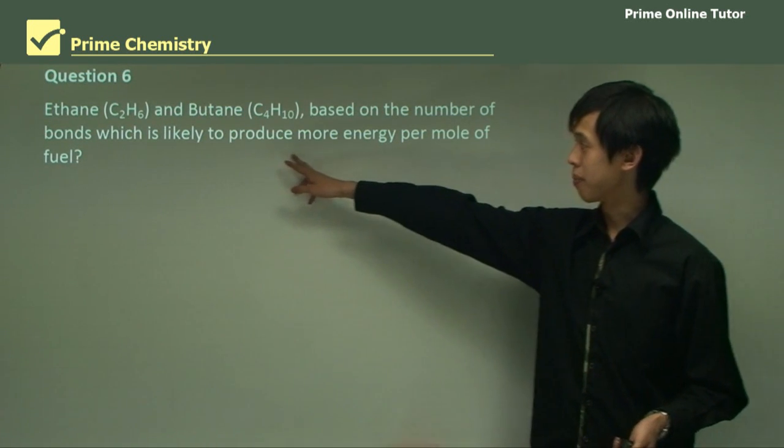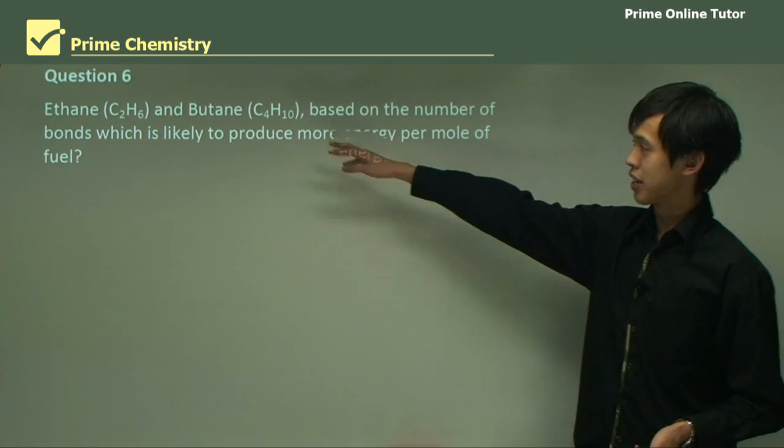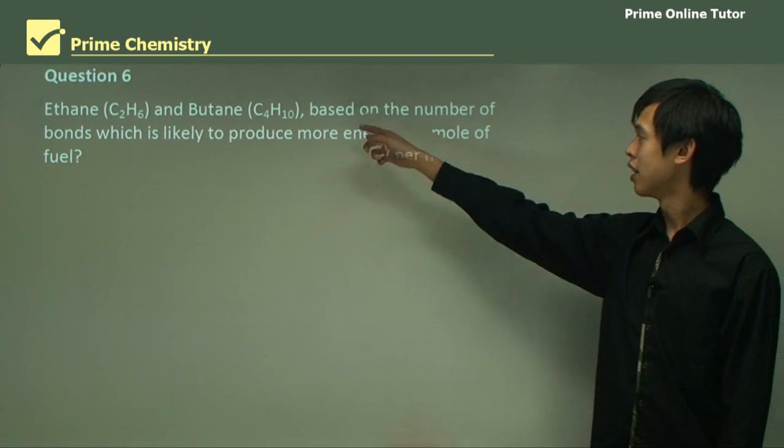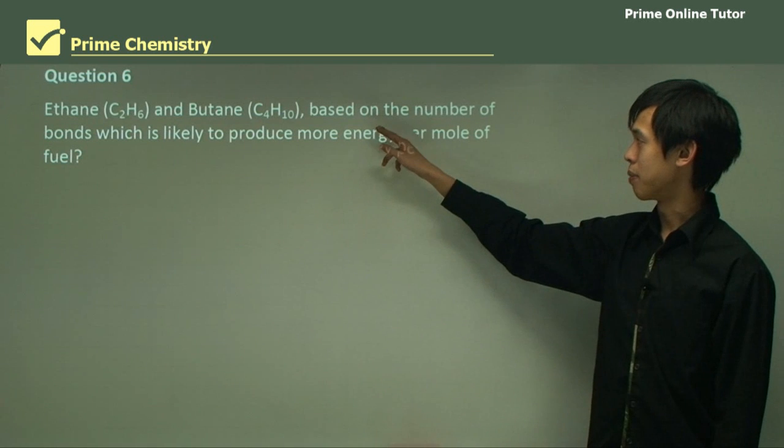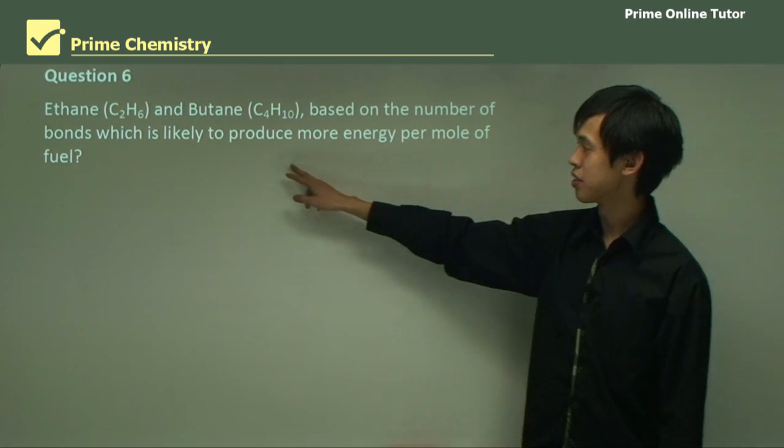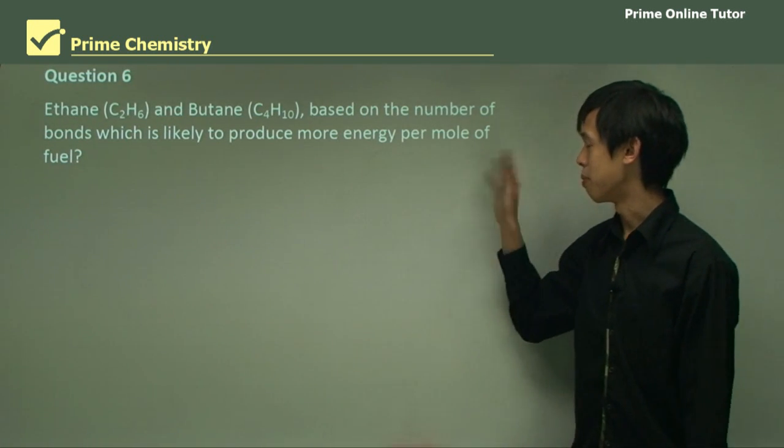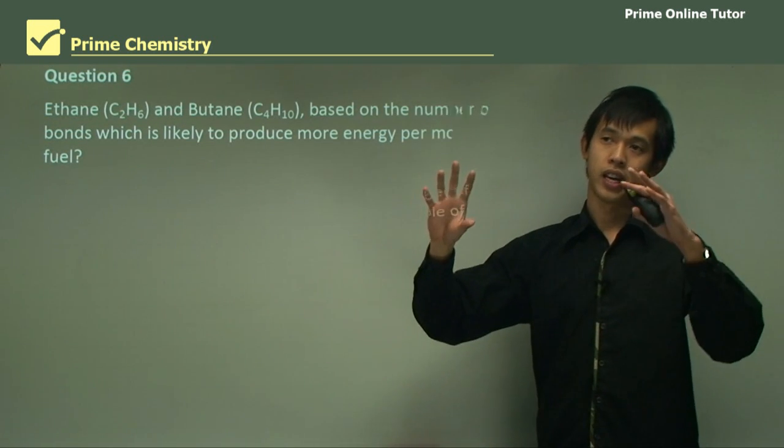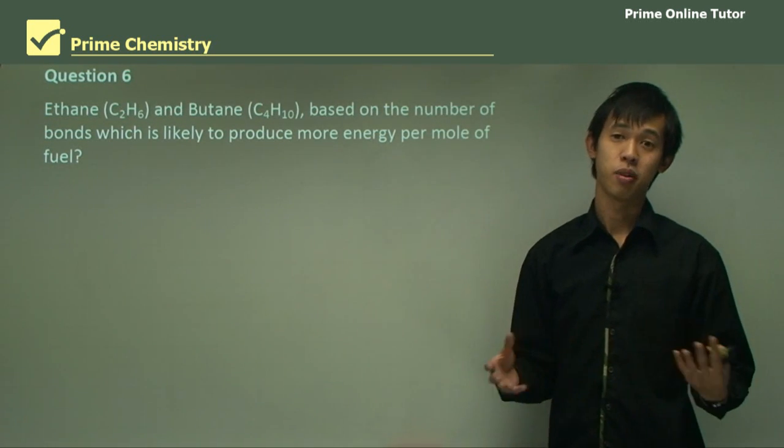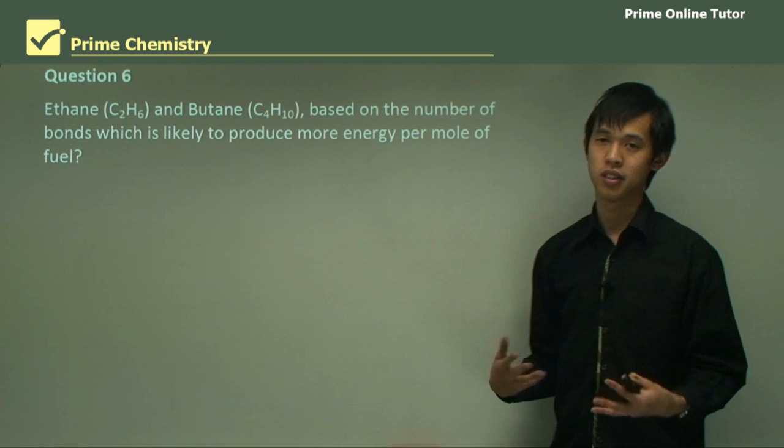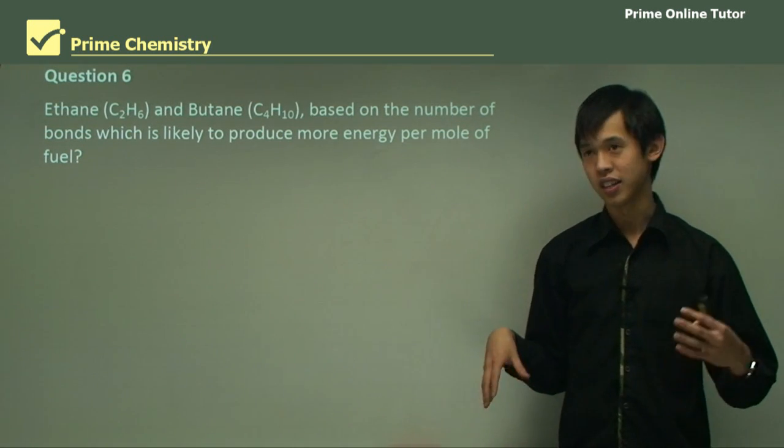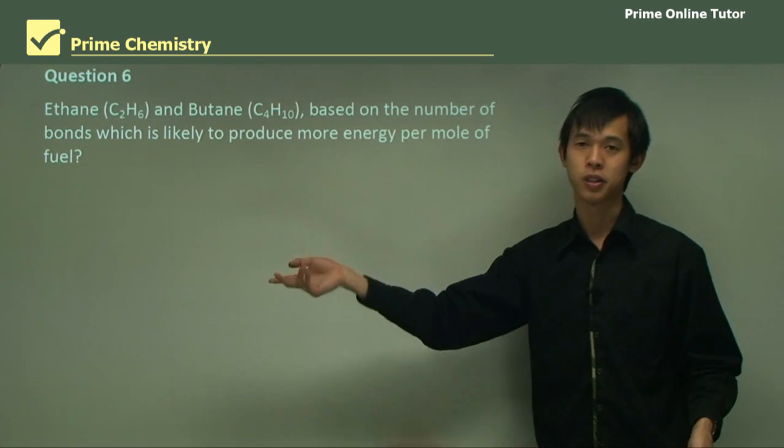So ethane and butane. Here are their chemical formulas: C2H6 and C4H10. Based on the number of bonds, which is likely to produce more energy per mole of fuel? So a mole is just a unit of measure where it's just a number of molecules. So one mole is like 6.022 times 10 to the 23 molecules. But in this case, we'll just call it a number of molecules. They're the same number of molecules.